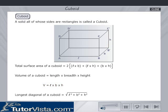Longest diagonal of a cuboid equals the square root of (L² + B² + H²).